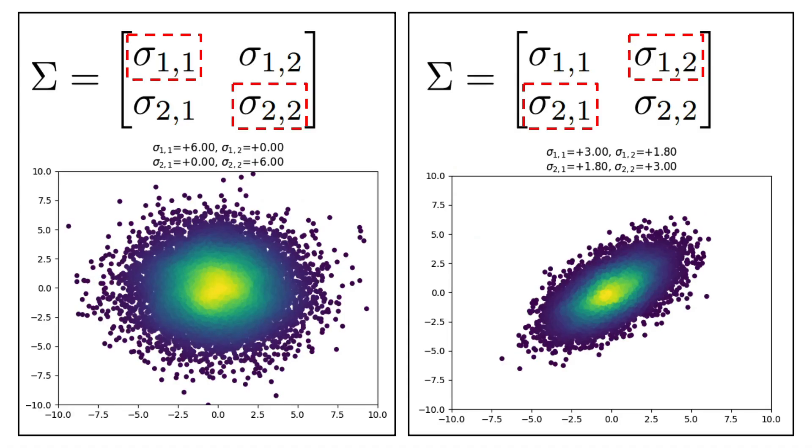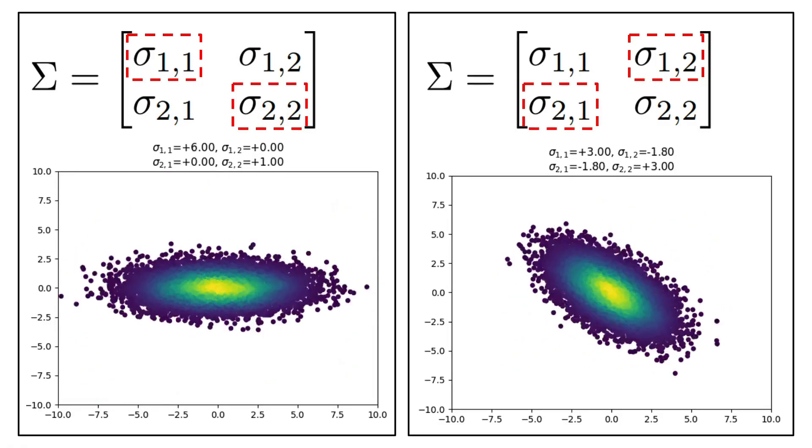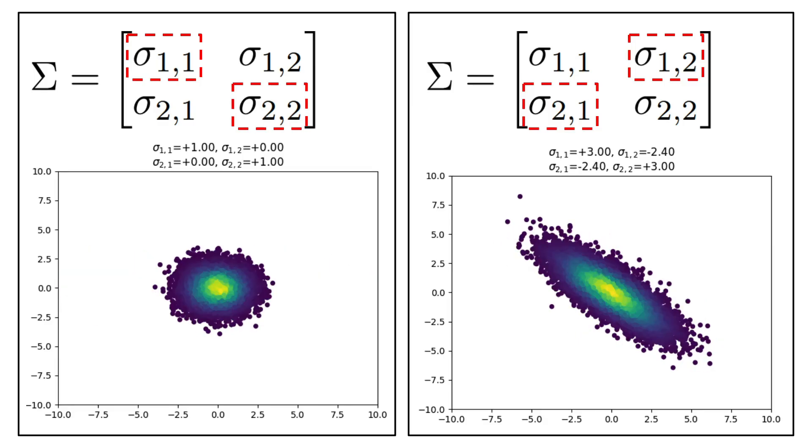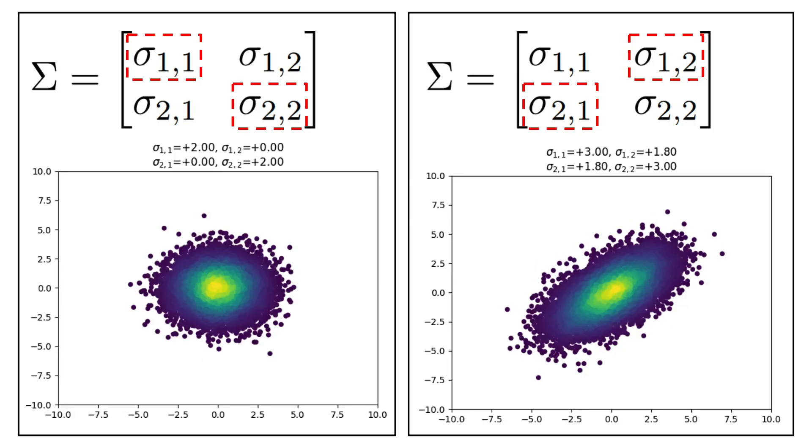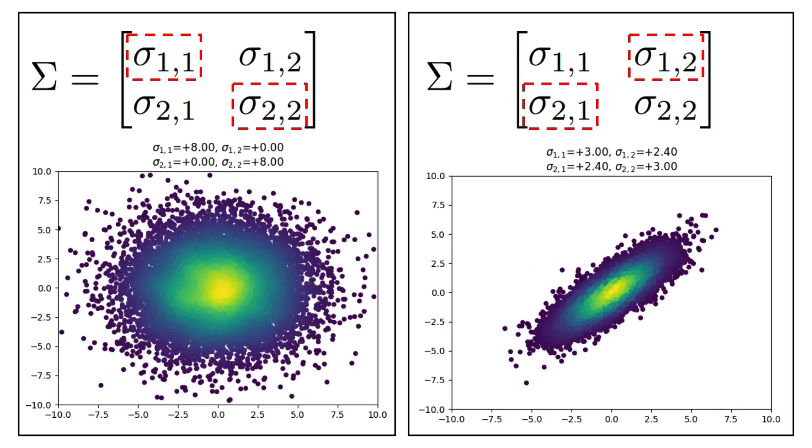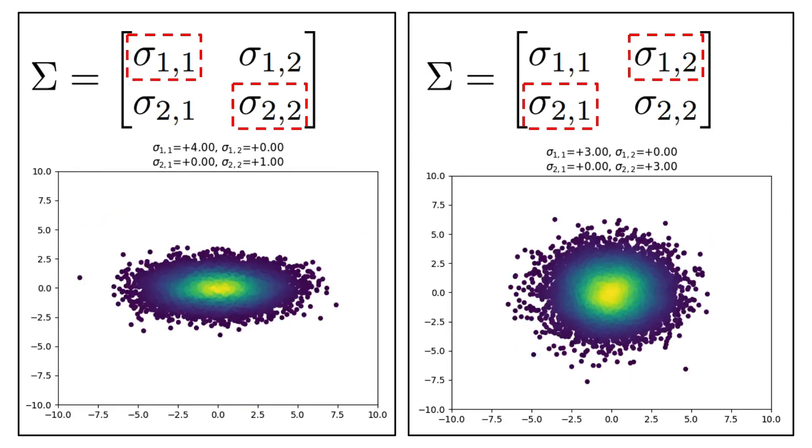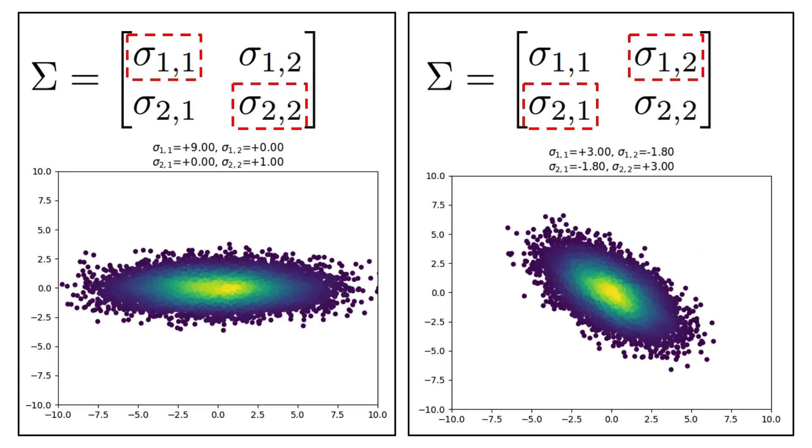And that's about it folks. So to recap, the elements on the main diagonal tell us about the spread or variation in each dimension, while the elements that are not on the main diagonal tell us about the direction of their relationship, either positive, negative, or zero.